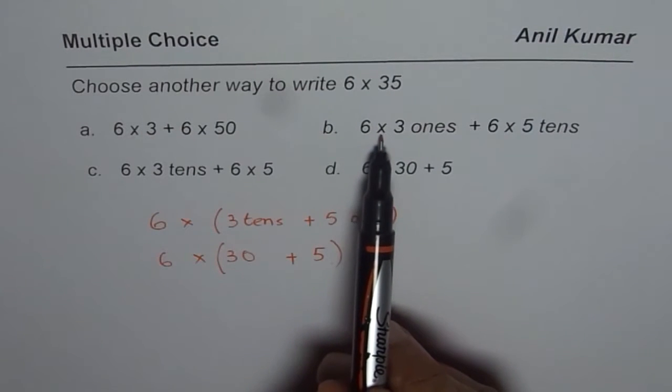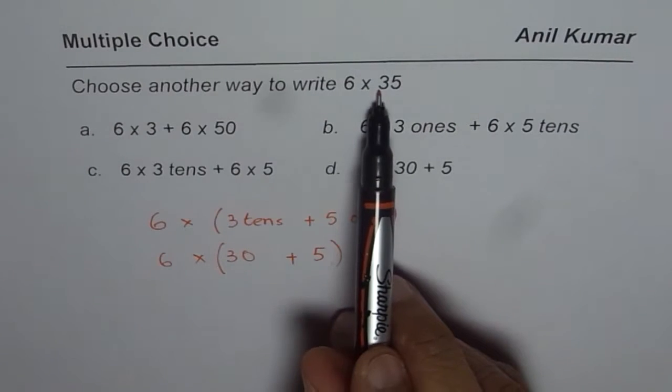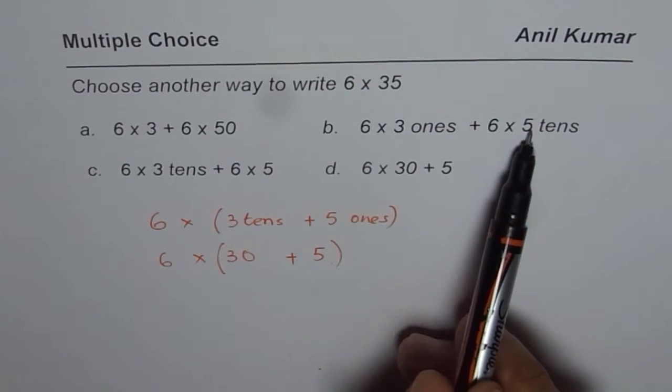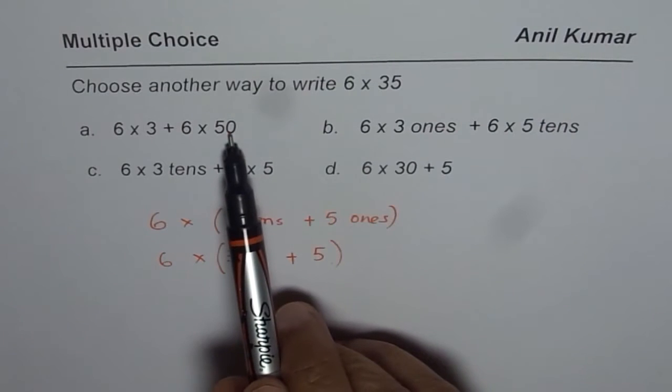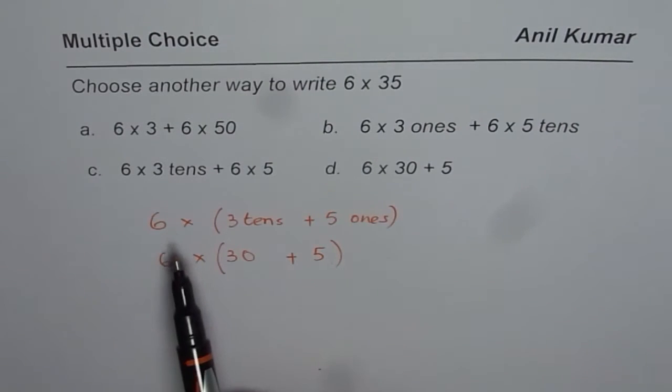Part B is 6 × 3 ones + 6 × 5 tens. No, 3 is tens and 5 is ones, not tens. This is kind of another way of writing the first option, so that is also incorrect.